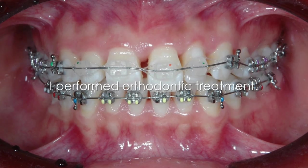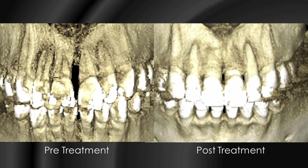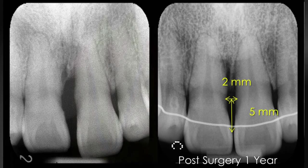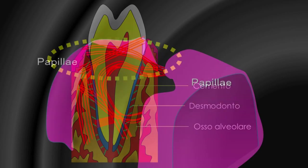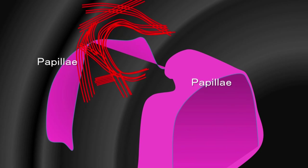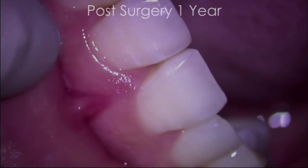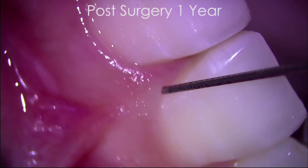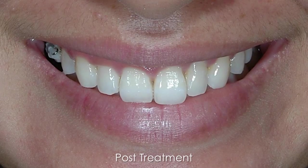After regenerative surgery, I performed orthodontic treatment. This is a CVC image — pre-treatment, post-treatment — good result. This is the x-ray. Post-surgery 1 year: very good situation. Very, very healthy — before, there was a 9 mm pocket. This treatment is a papilla reconstruction. Pre-treatment patient smile, post-treatment patient smile. Post-surgery 1 year: very shallow sulcus, very, very healthy — before, a 9 mm pocket. Post-treatment, the patient is very happy.